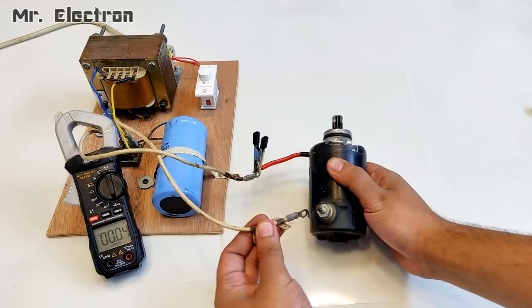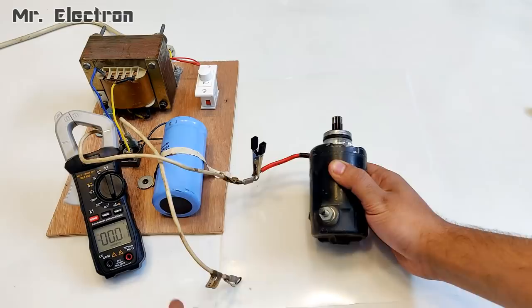You saw the current—it was somewhere around 25 amperes. Peak of 27 amps.